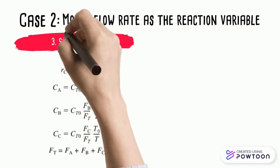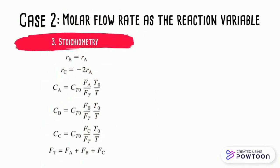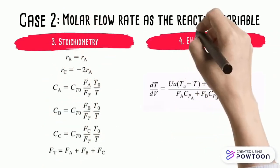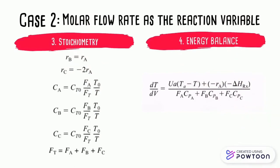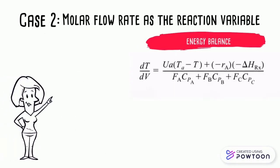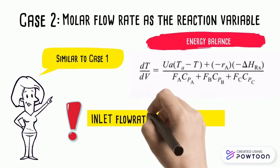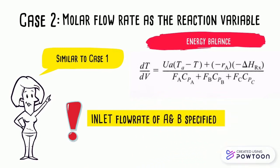Thirdly, we need the stoichiometry. And finally, we need the energy balance. By inputting all of the explicit variables for when molar flow rate is the independent variable, which is exactly similar to case 1, except that the inlet values F0 and Fb0 are specified instead of X at V equals zero, a sample graph can be plotted.